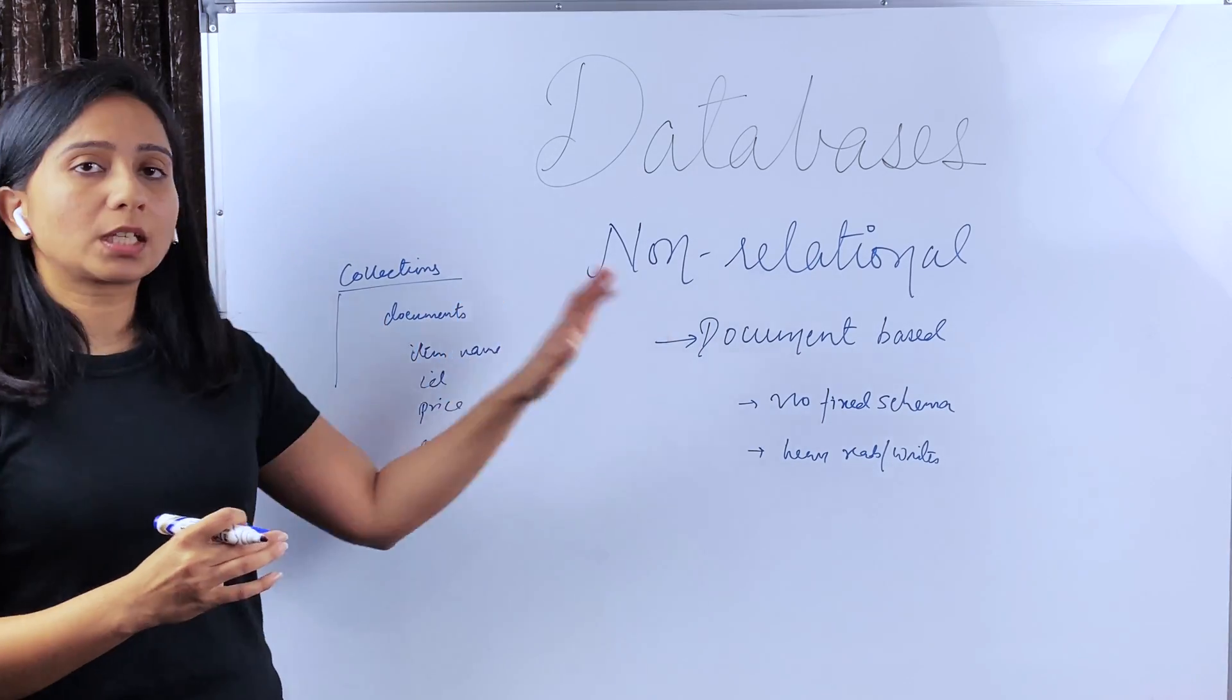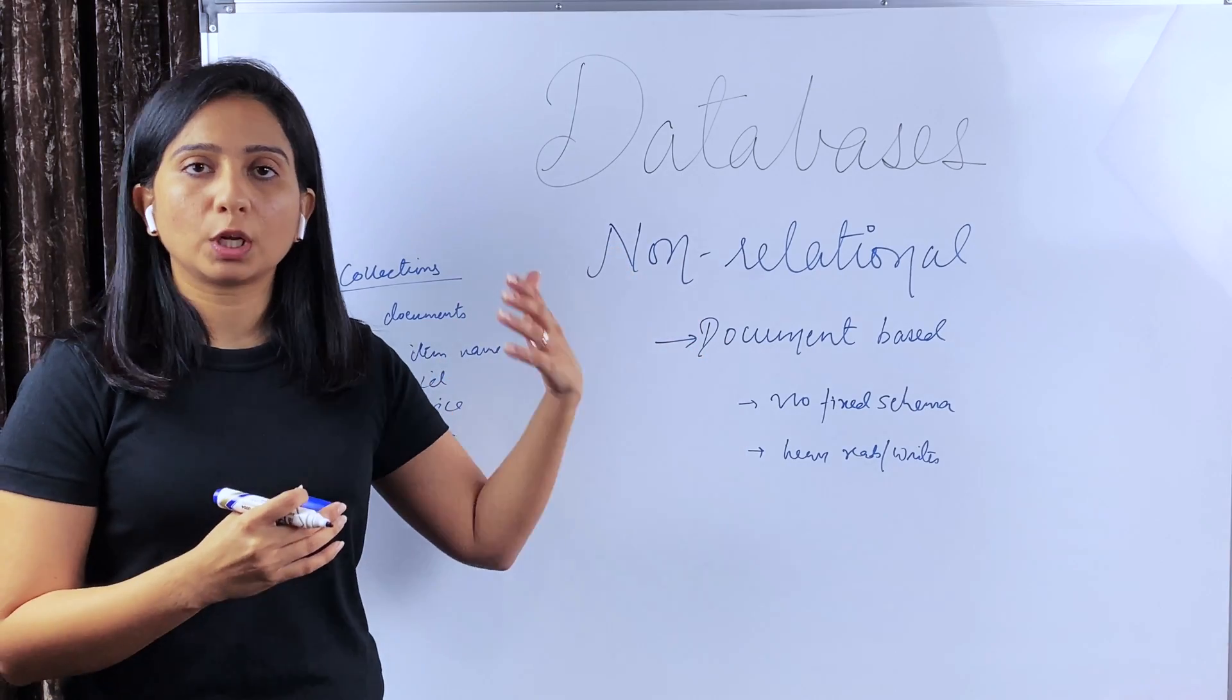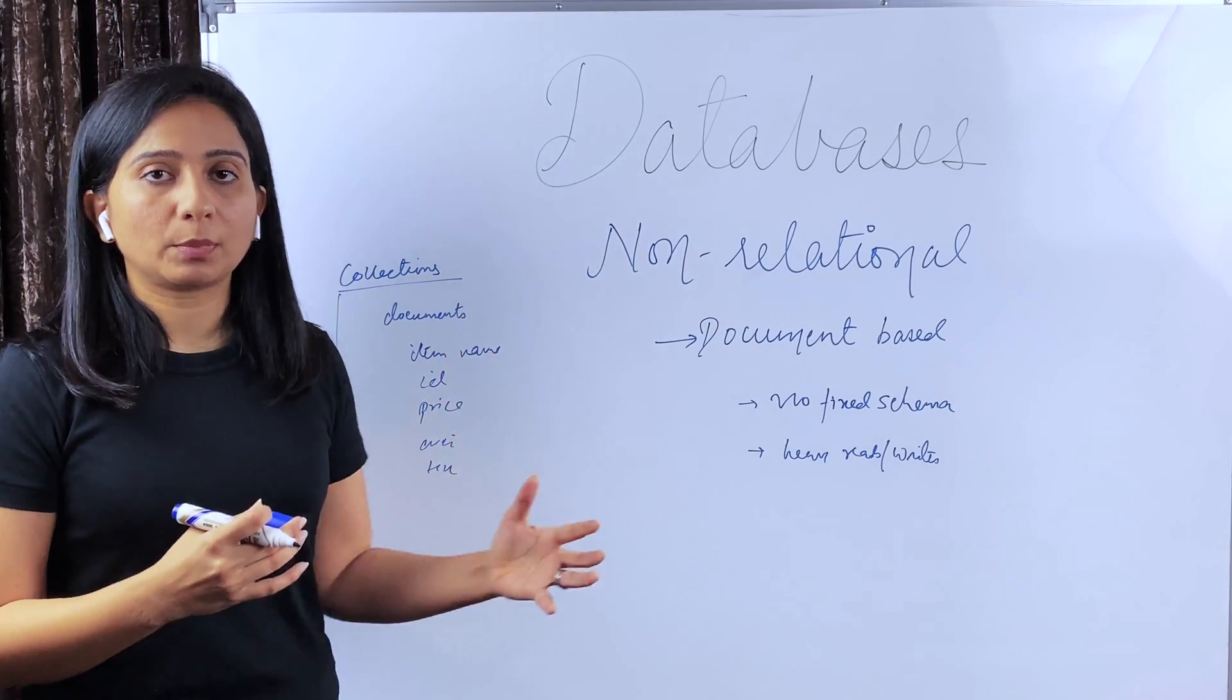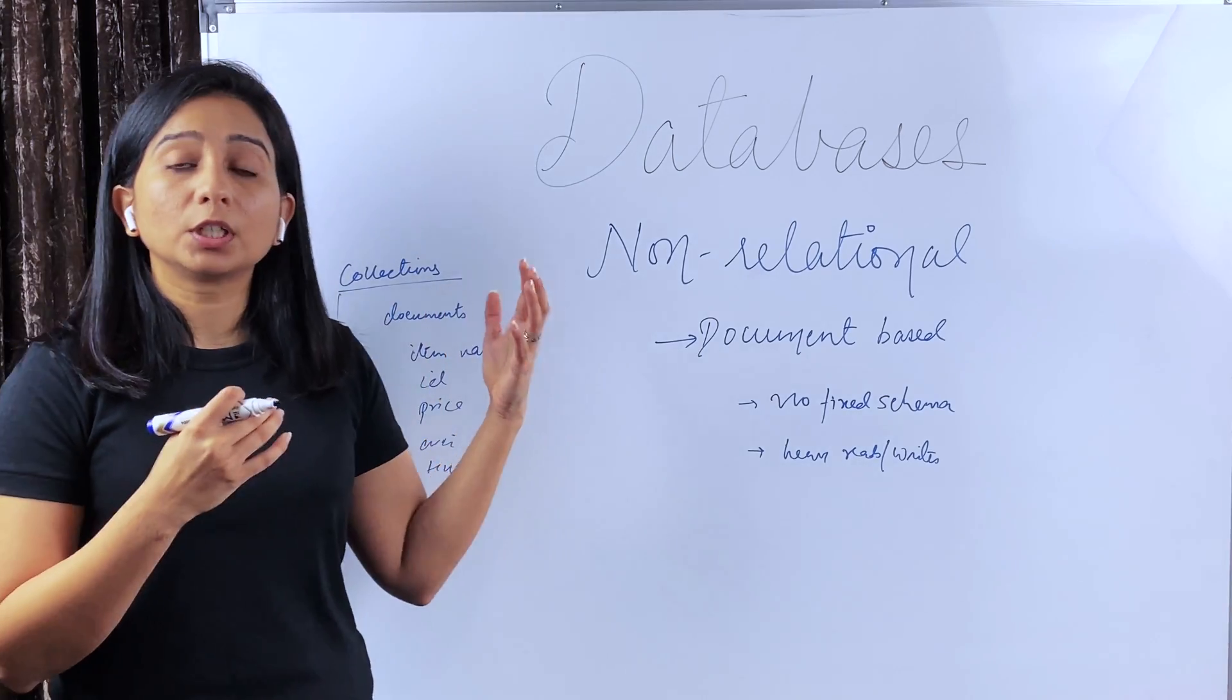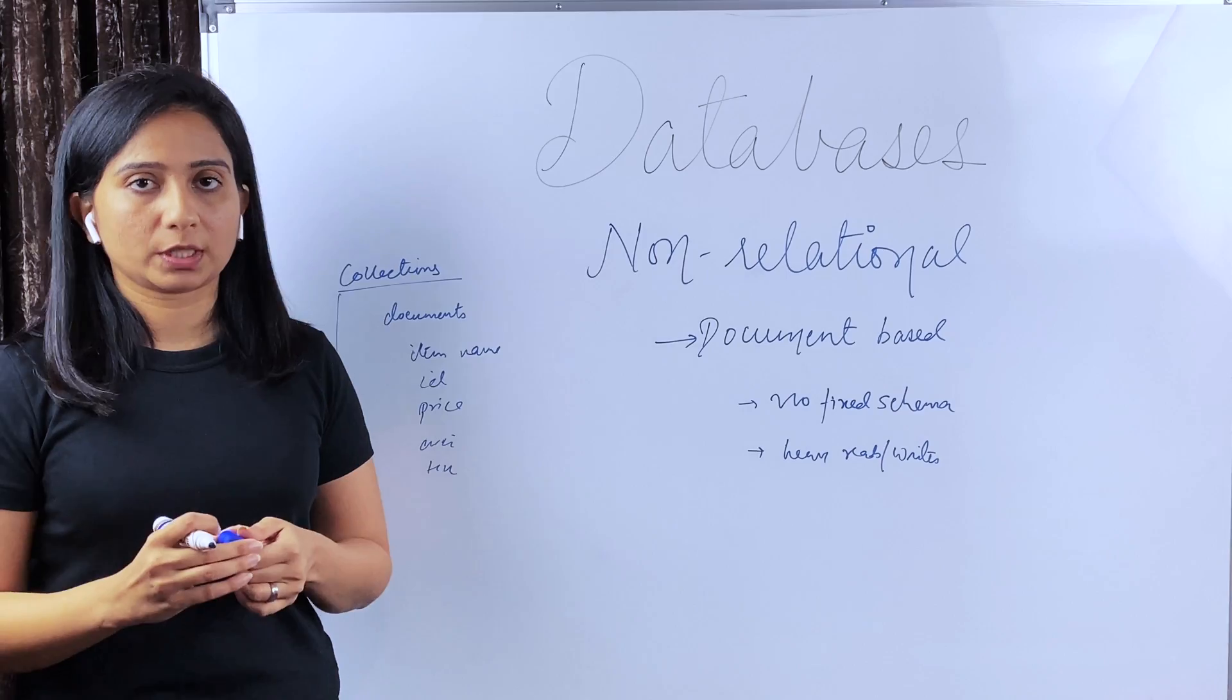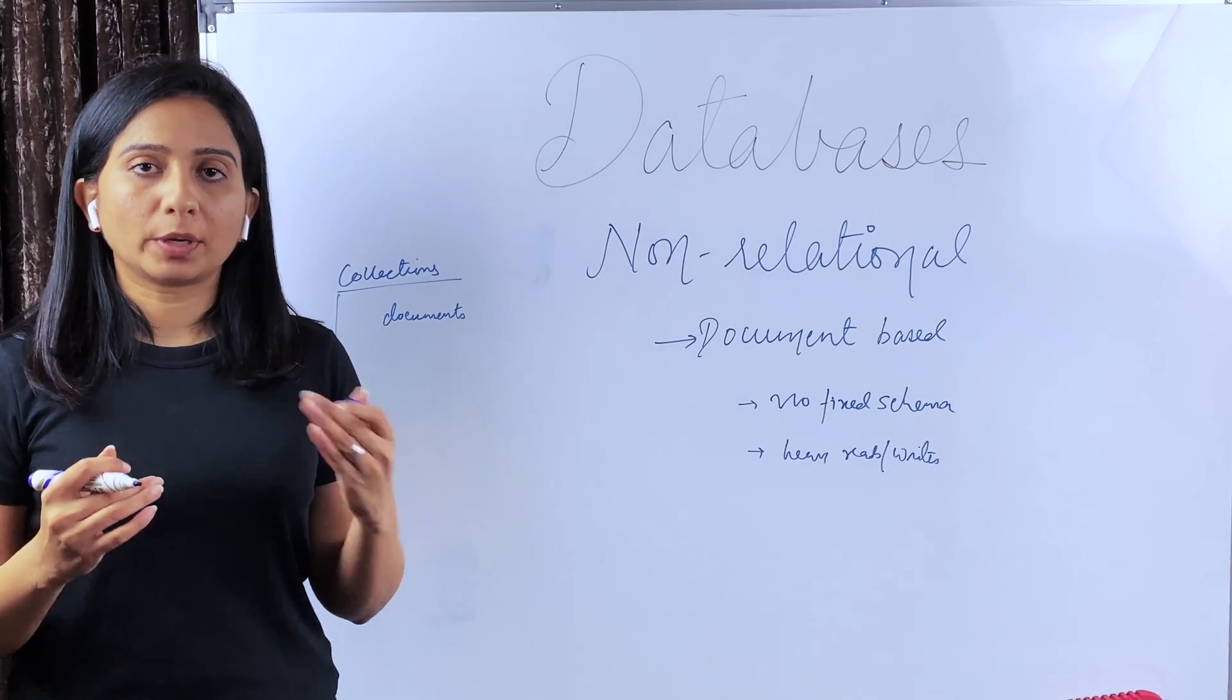So when you have use cases like that, the schema is not fixed, you don't know how it is going to evolve over time. You want that flexibility of keeping dynamic data. And also when you have the use cases for heavy reads and writes, in such cases, document DBs are a choice. Let's take one more example to make it more clear.